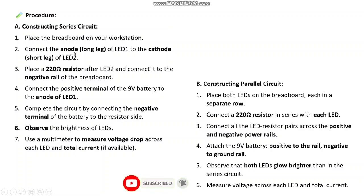For the series circuit: connect the anode of LED one to the cathode of LED two. Then place a 220-ohm resistor. Connect the positive terminal to pin 9 via a resistor and complete the circuit by connecting the negative terminal. Observe the brightness of the LEDs. For the parallel circuit, connect a 220-ohm resistor in series with each LED, then connect all LED-resistor pairs across the positive and negative power rails.